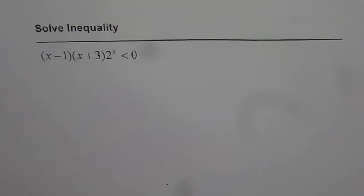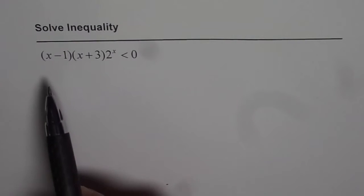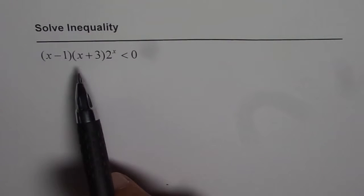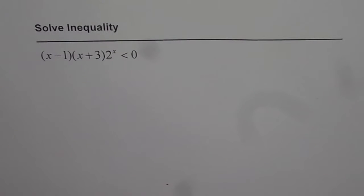Here is a very interesting question on solving inequalities. The question is x minus 1 times x plus 3 times 2 to the power of x is less than 0. We need to find the solution, that is the interval in which x will result into this inequality.